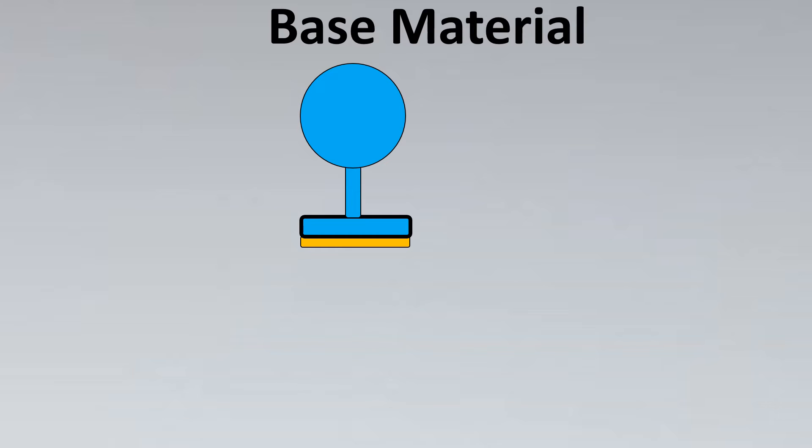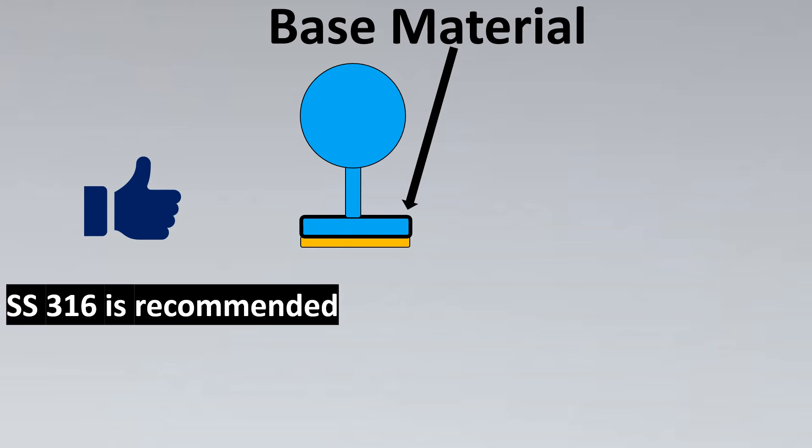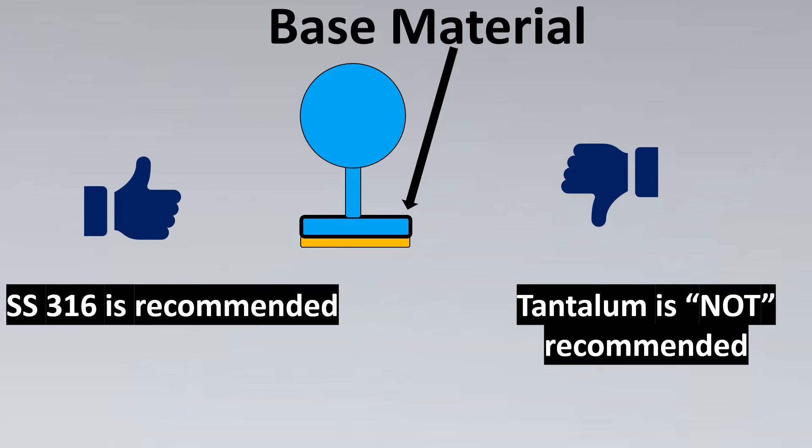For such cases, API standard specially recommends SS316 material. This base material usually is recommended to be SS316, and below it would be our gold plating. What is the least recommended one? It's tantalum, because it is the least recommended when it comes to hydrogen service. This metal is not suitable for hydrogen services. If your gold plating fails, this material is going to be exposed to the service, which is absolutely not recommended.